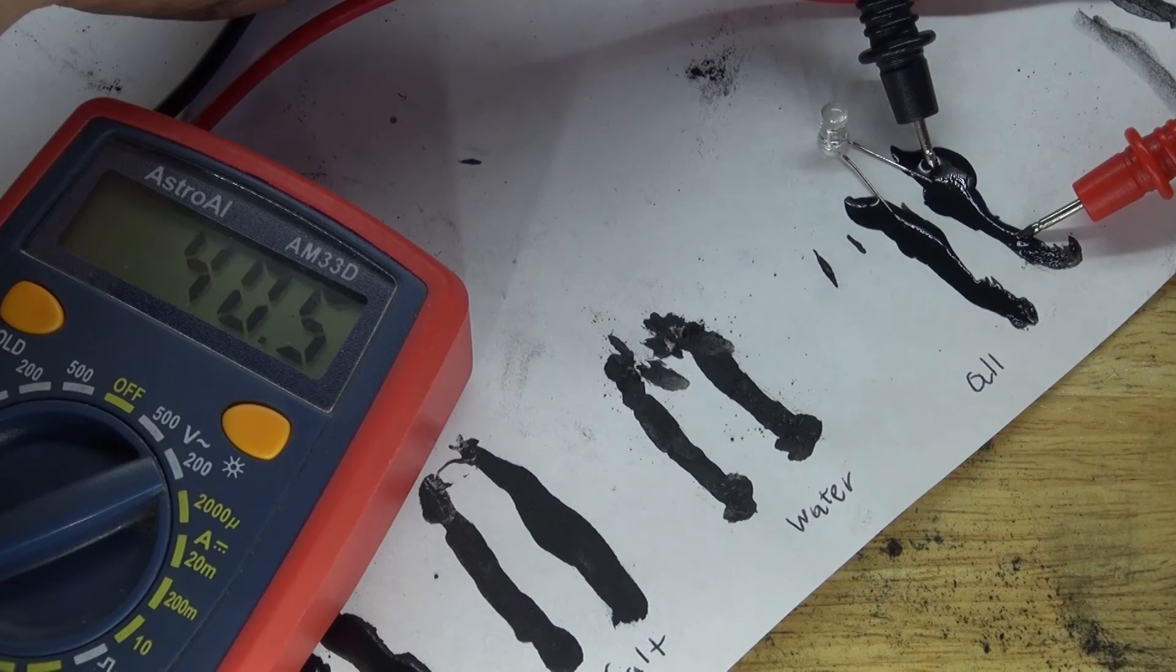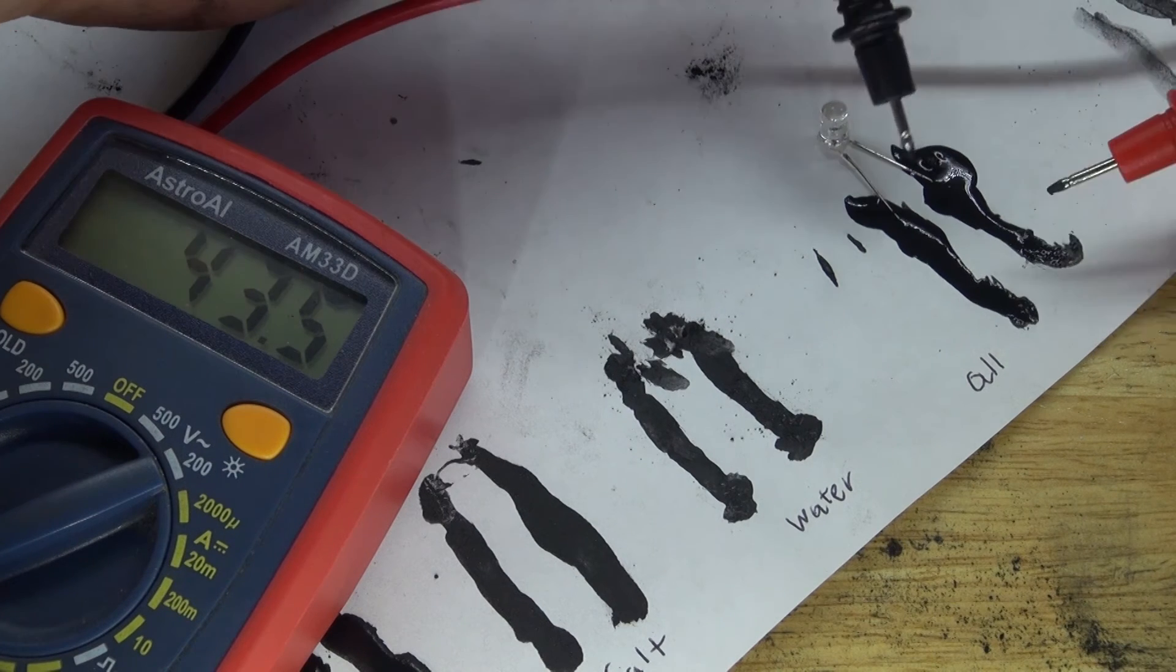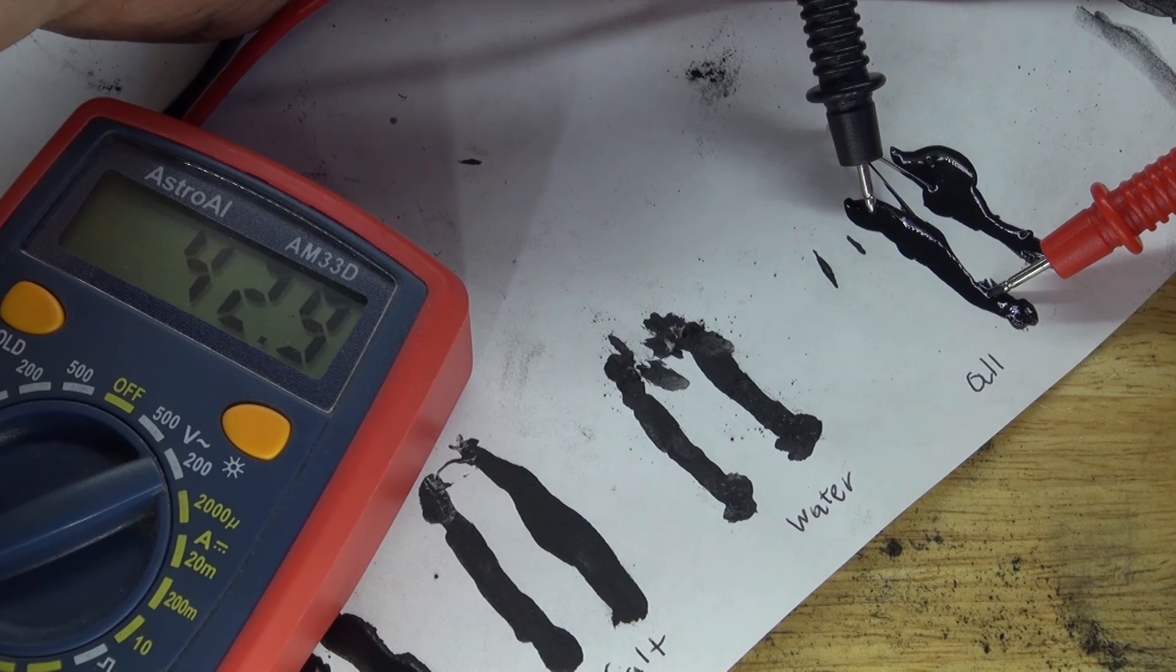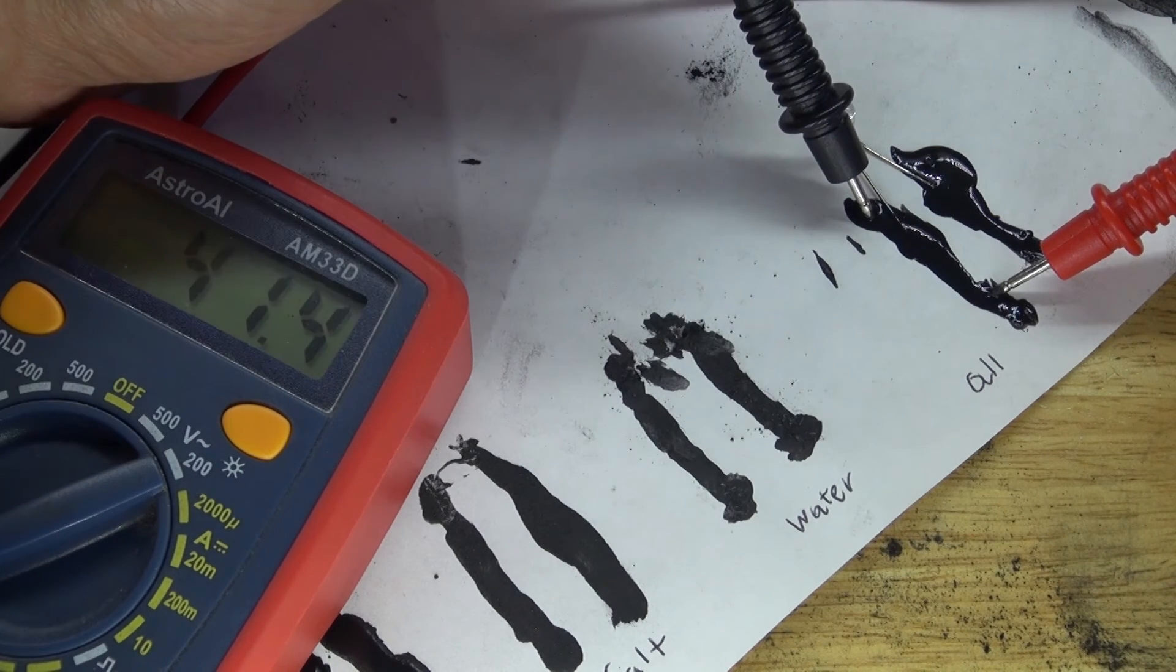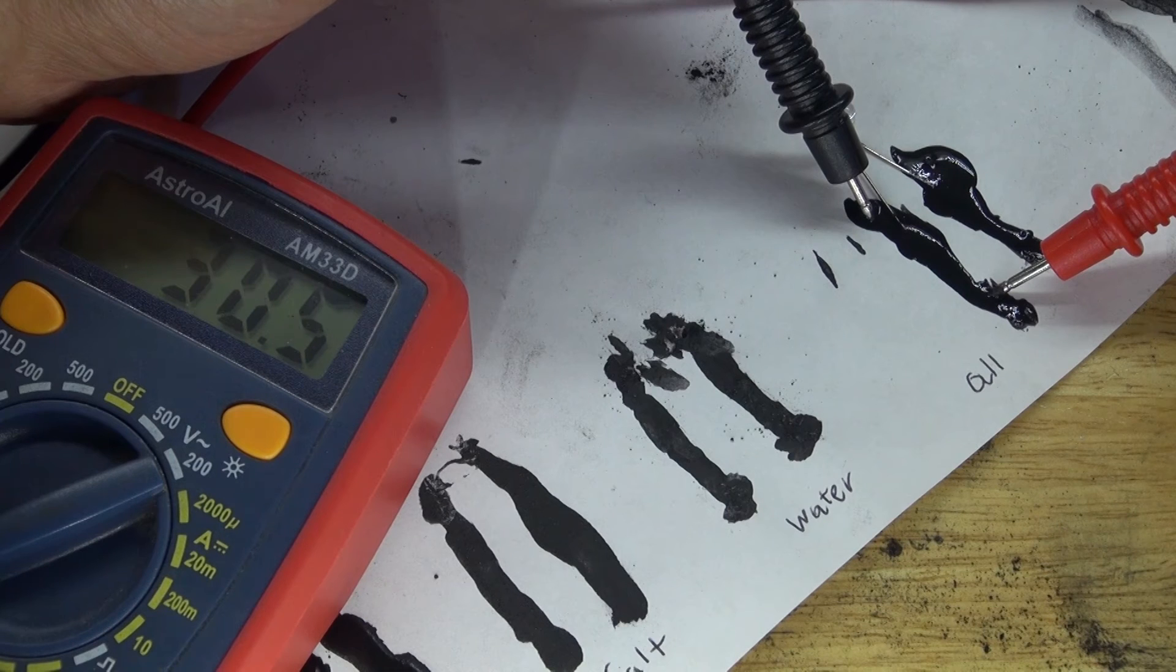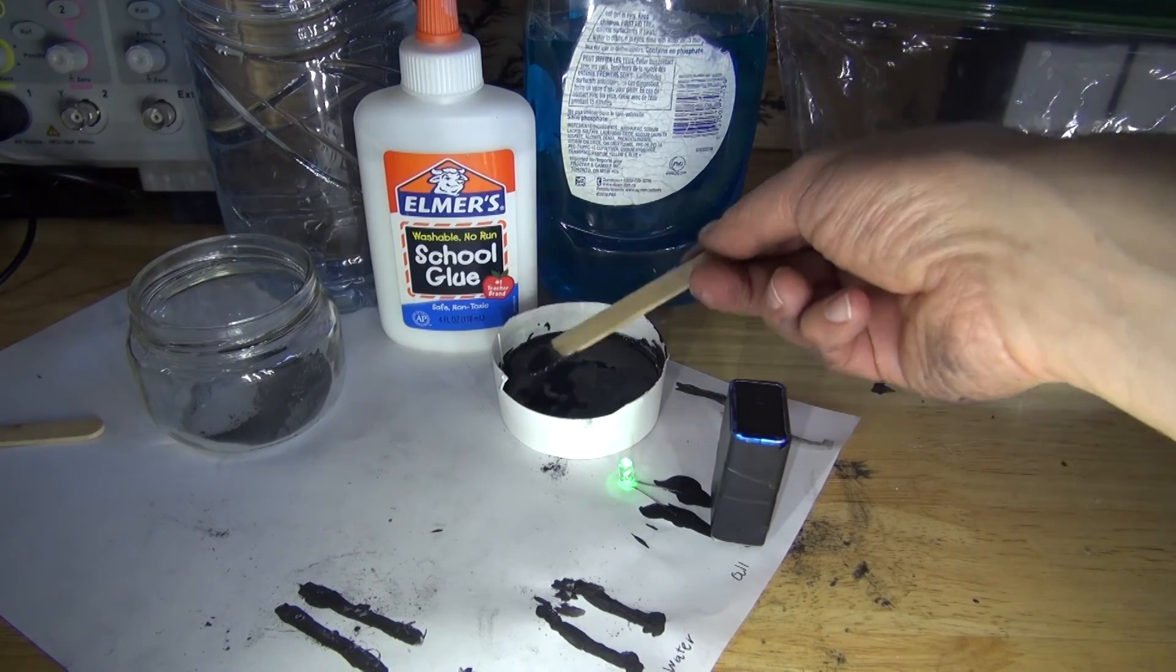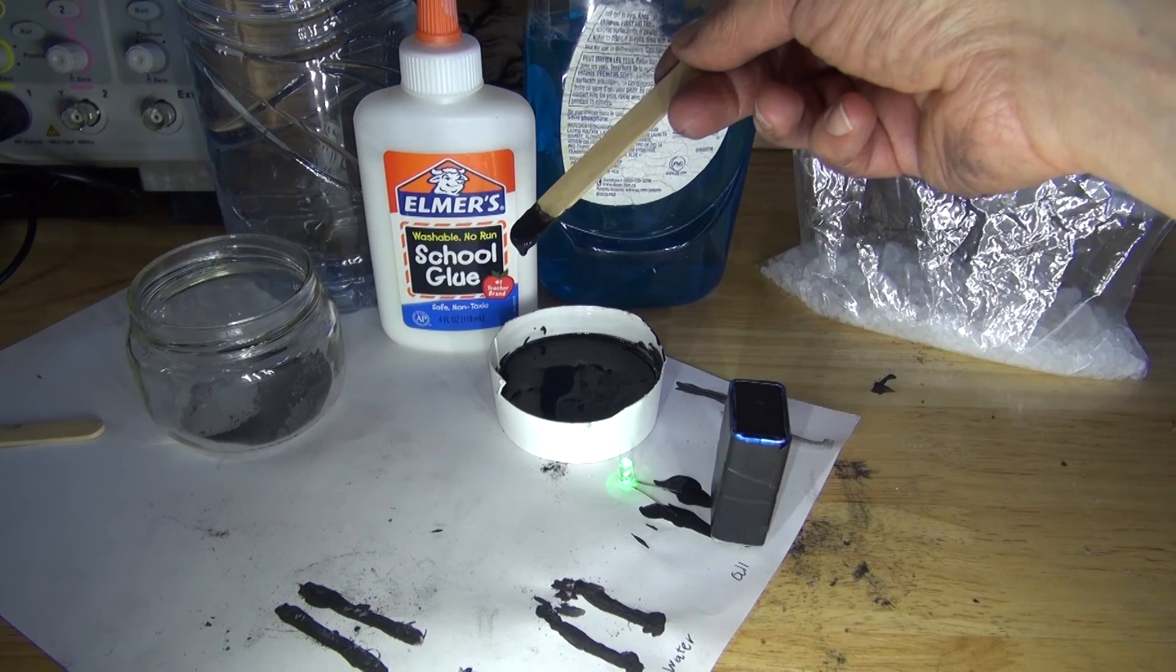And now take a measurement. As you can see, it's about 47 kOhms. The second line. About 50 kOhms. Maybe 60. I would rather say about 30 kOhms. And as you can see, this makes a very nice paste. Very nice consistency.